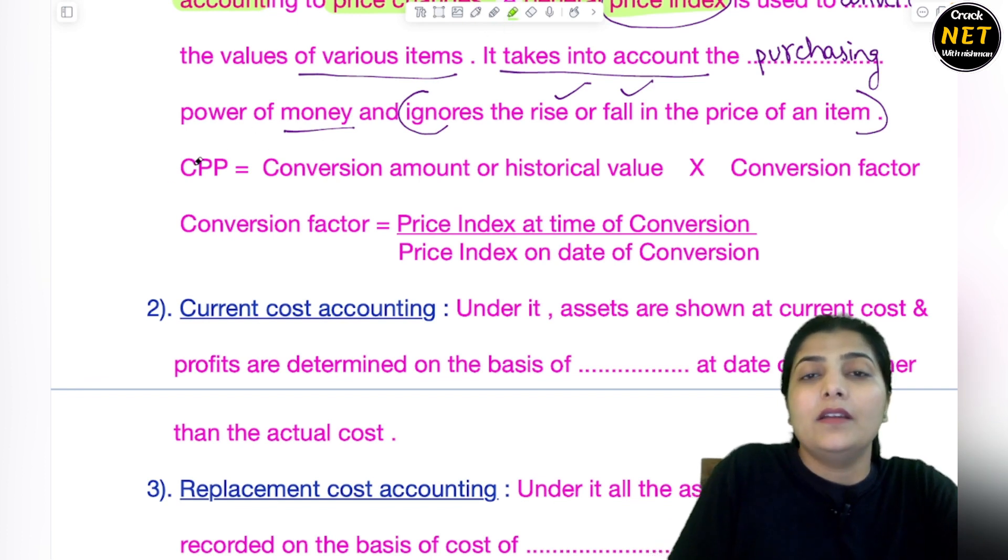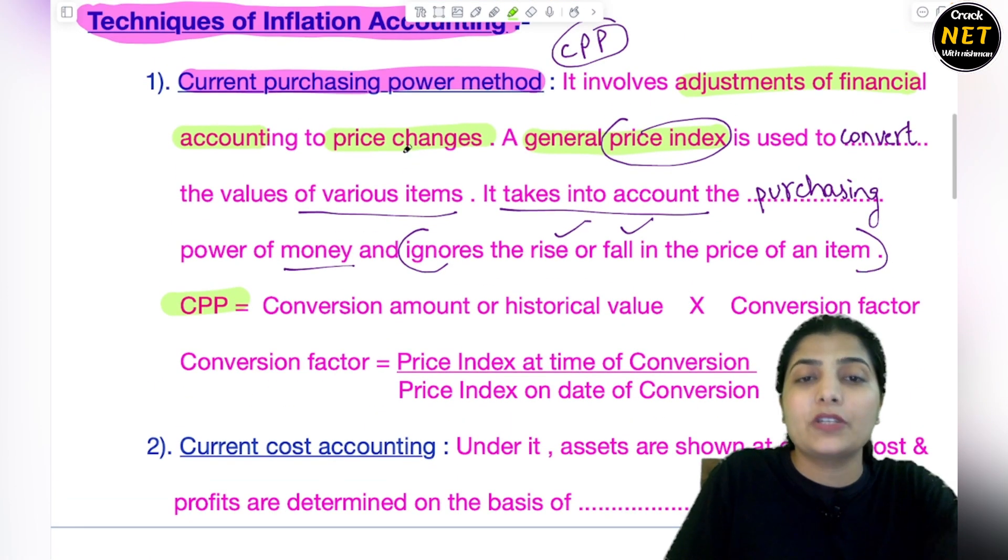So I'll define this in the numerical method. How is CPP, Current Purchasing Power method - this Current Purchasing Power equals Conversion Amount or historical value that you had, and you multiply it by the Conversion Factor.